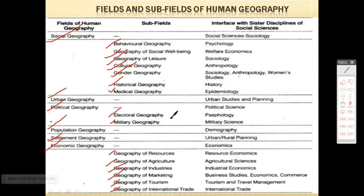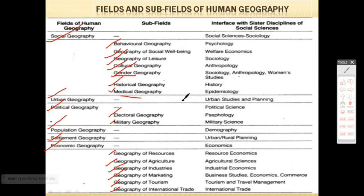These are all fields — there are many different branches. When you go on to study geography at graduate and post-graduate level, you will learn these branches of Human Geography at an advanced level. I am strictly following your syllabus. But if you want to know more about what medical geography or gender geography is, you need extra knowledge — please let me know so I can make an extra video. For the time being, we will only deal with this.